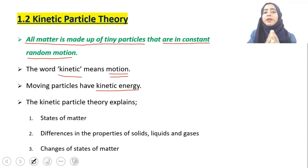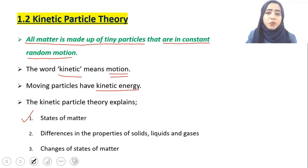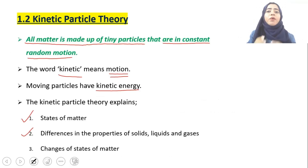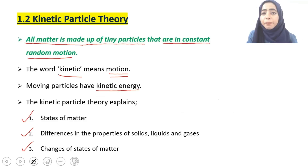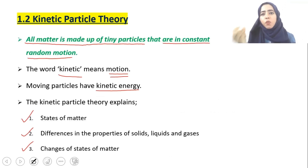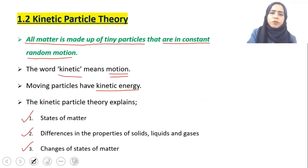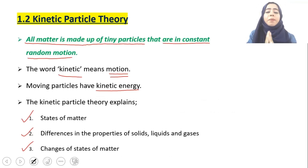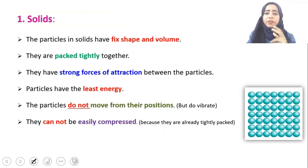Based on kinetic particle theory, we will explain three important points: number one, it will tell us about the three states of matter; number two, it will tell us about the differences in properties of these states; and number three, it will tell us about changes of states — how we can change solid into liquid, liquid into gas, and gas back into solid.